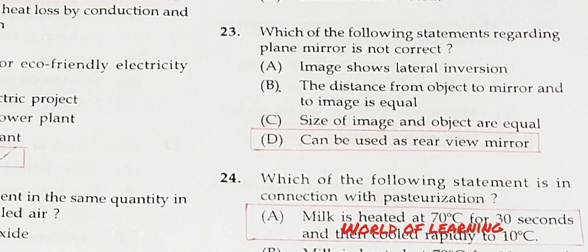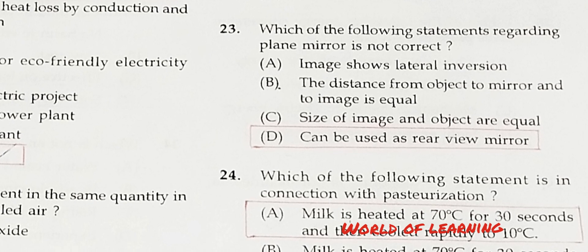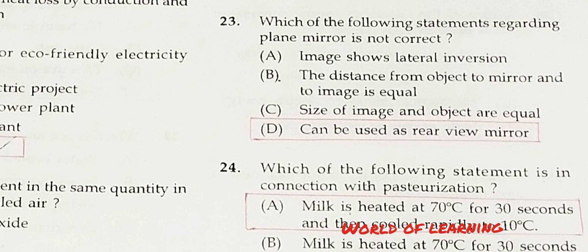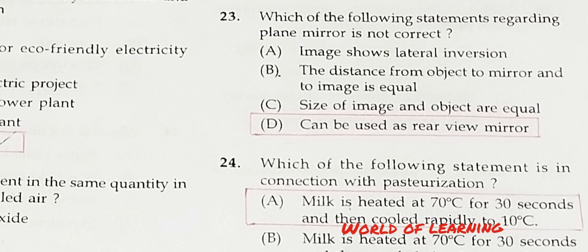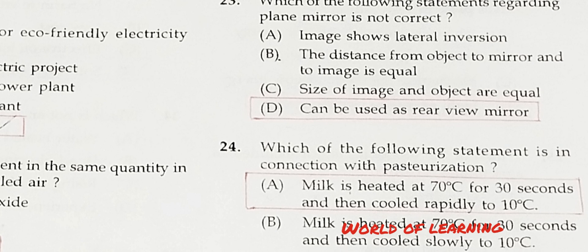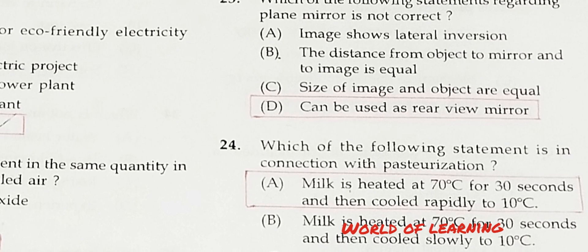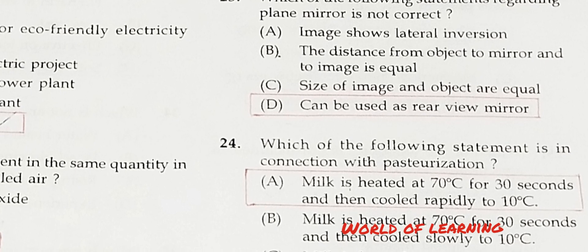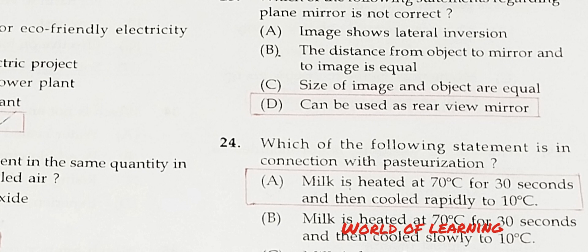Question 23: Which of the following statements regarding a plane mirror is not correct? Option A: Image shows lateral inversion. Option B: The distance from object to mirror and to image is equal. Option C: The size of image and object are equal. Option D: Can be used as a rear view mirror. Correct answer is Option D, can be used as rear view mirror.